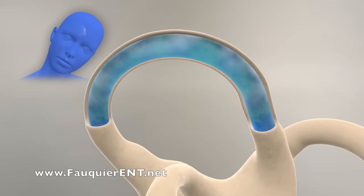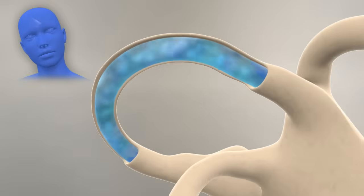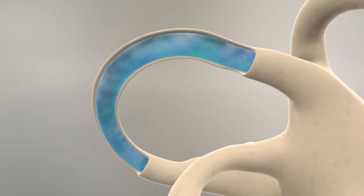The posterior semicircular canal shown here detects when the head tilts down towards the shoulder.